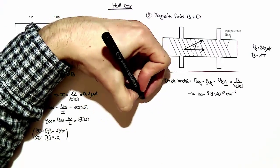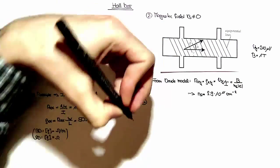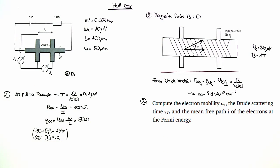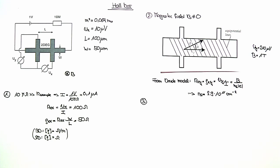Now, in the third part of the exercise, we are asked to calculate the electron mobility, the Drude scattering time, as well as the mean free path of the electrons at the Fermi energy. By again using the Drude model, we can express the longitudinal resistance of the hole bar.